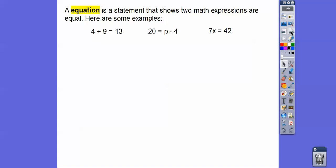So here's some examples. 4 plus 9 equals 13. 20 equals p minus 4. 7x equals 42. So if there's an equal sign, then it's called an equation. And we solve equations if there's a variable.